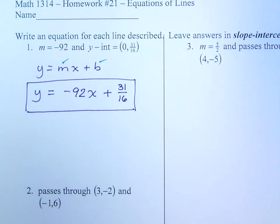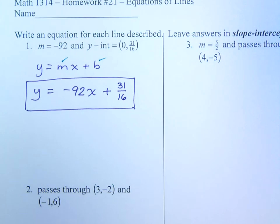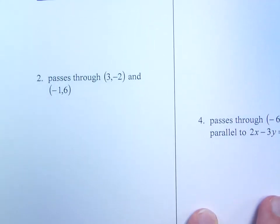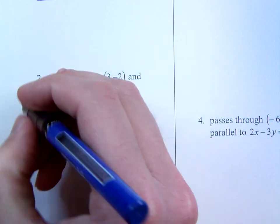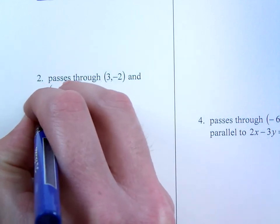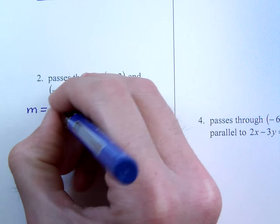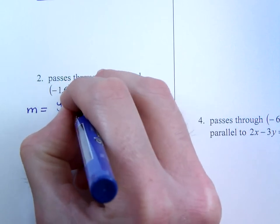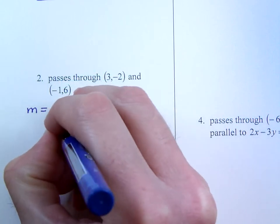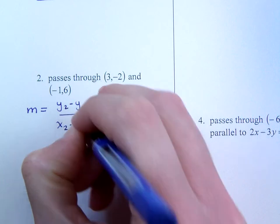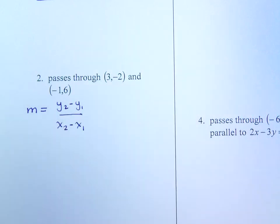But I can't say the same thing for number 2. Number 2 has you passing through two different points. So we must first find the slope. So the slope is going to be the change in y over the change in x. Now it doesn't matter which one you call the first point and which one you call the second point.